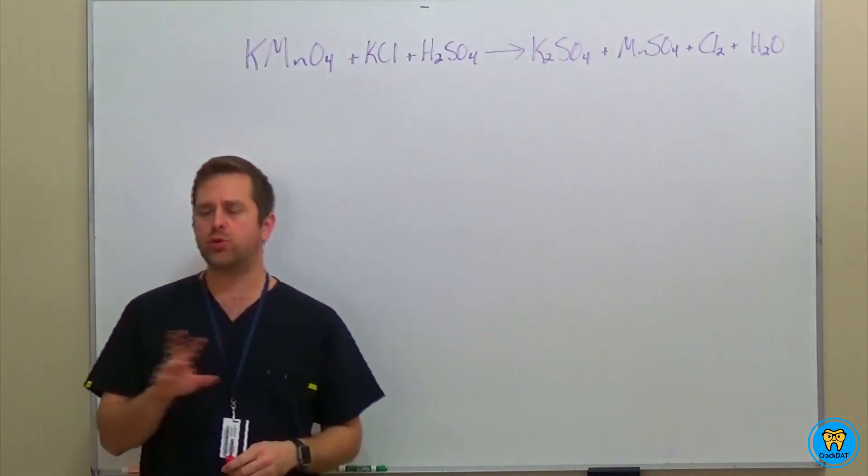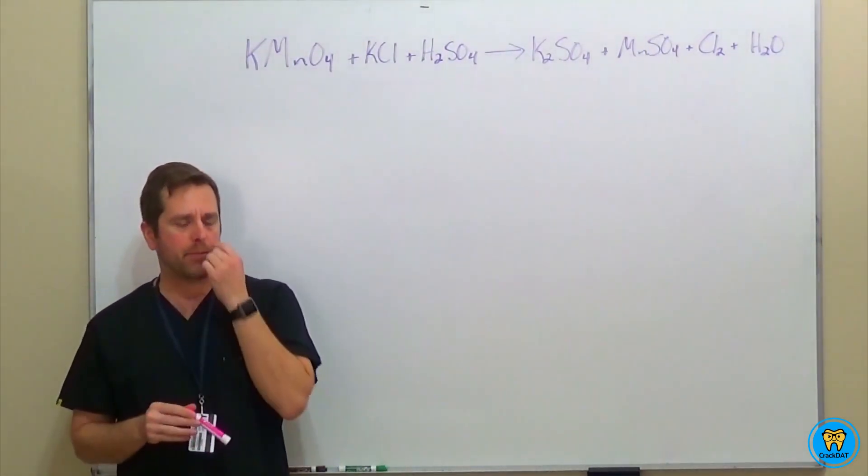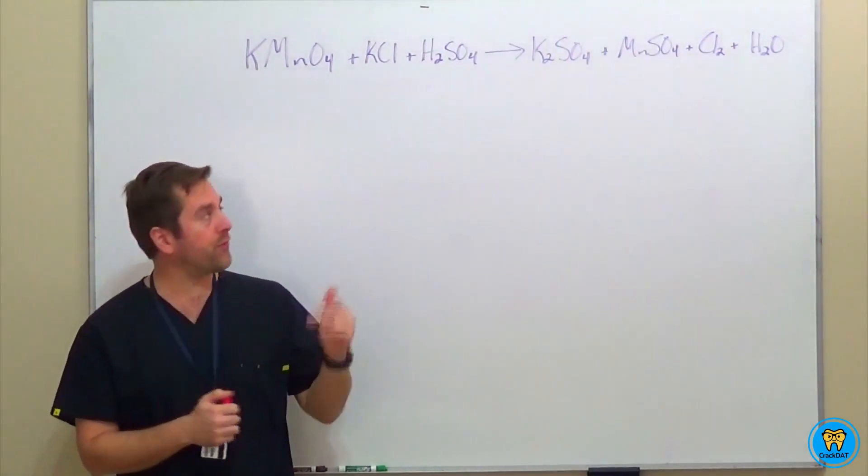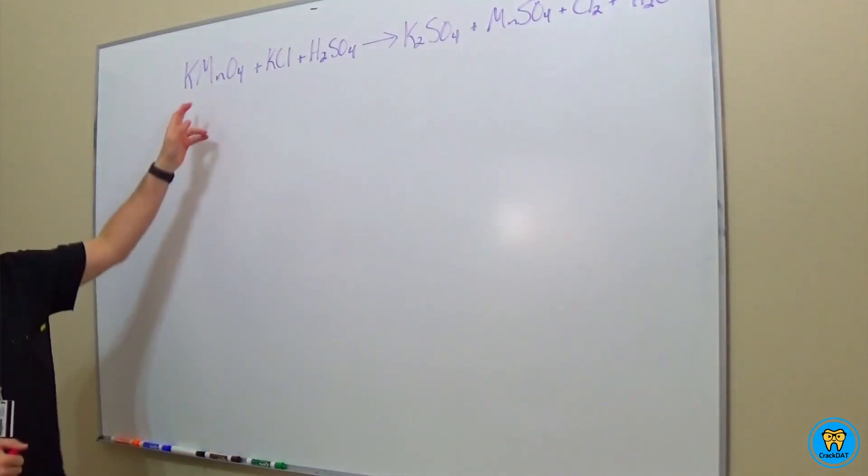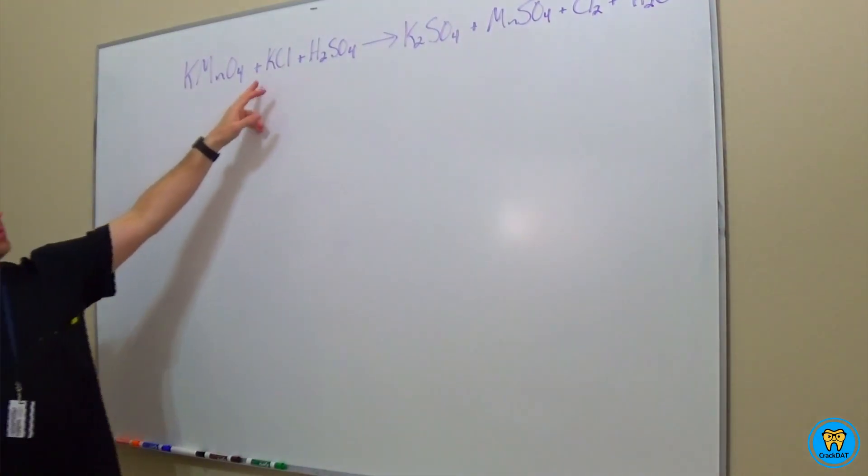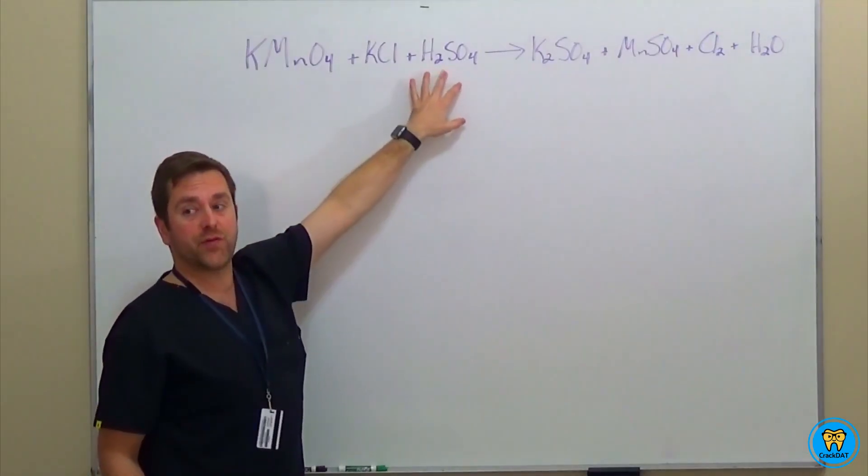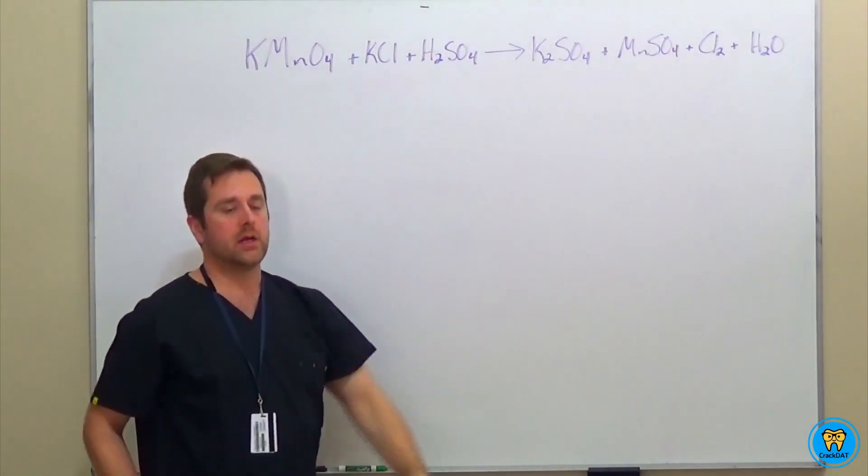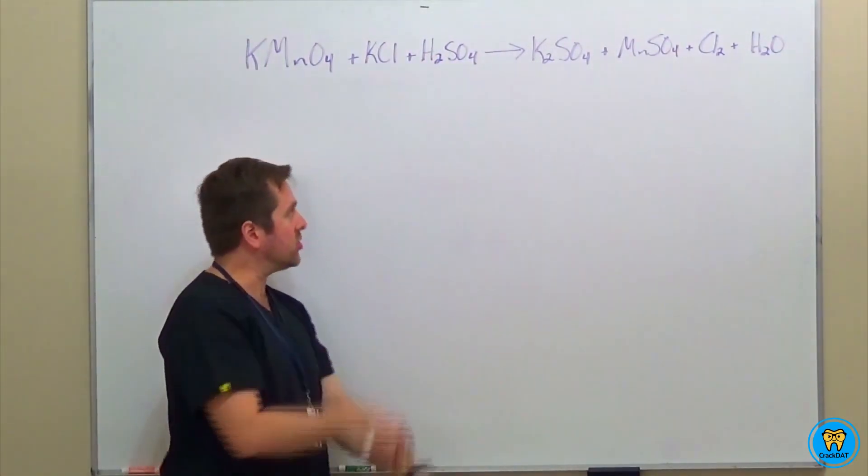So that's what we're going to practice. We're just going to do two very quick questions. I believe they both occur within an acidic solution. So here's our first reaction. You've got potassium permanganate reacting with potassium chloride, notice sulfuric acid, one of the seven strong acids, so yes, we've confirmed this is occurring within an acidic solution.